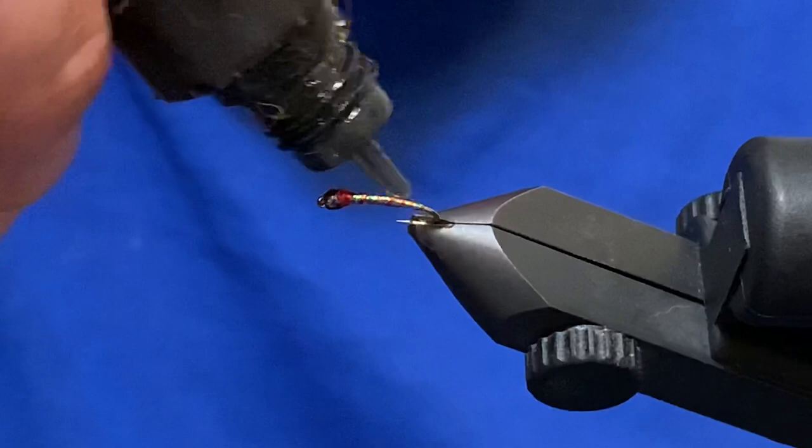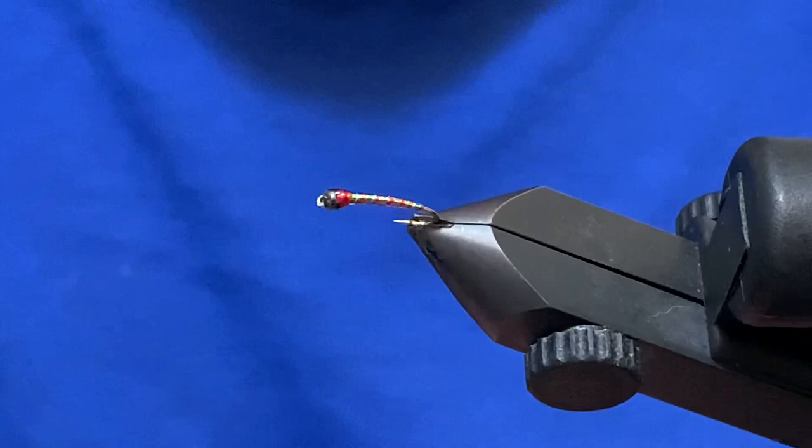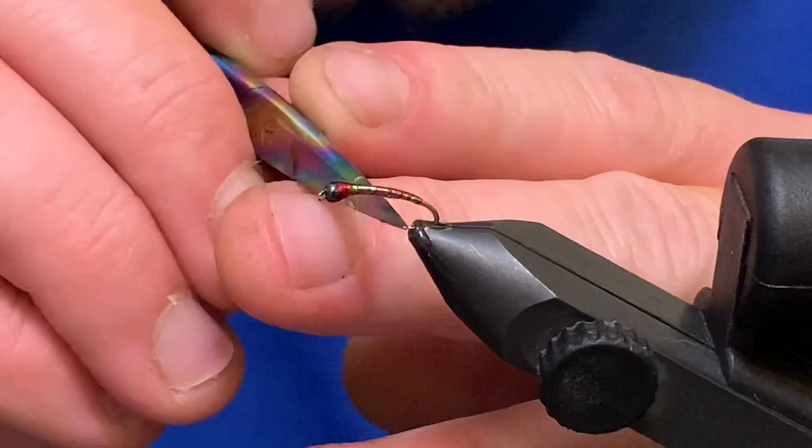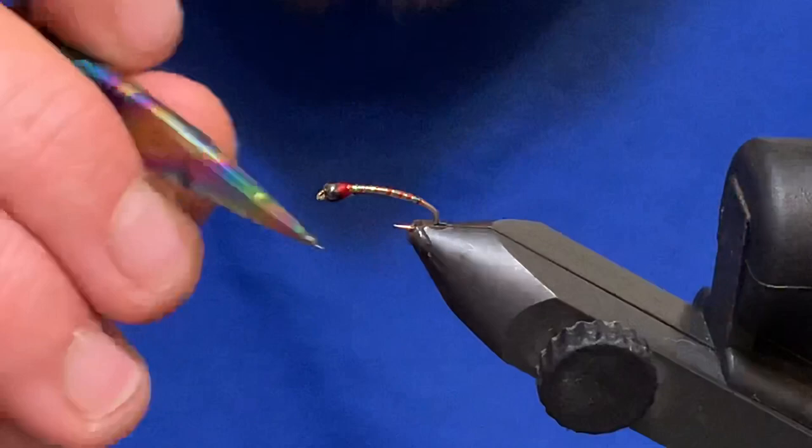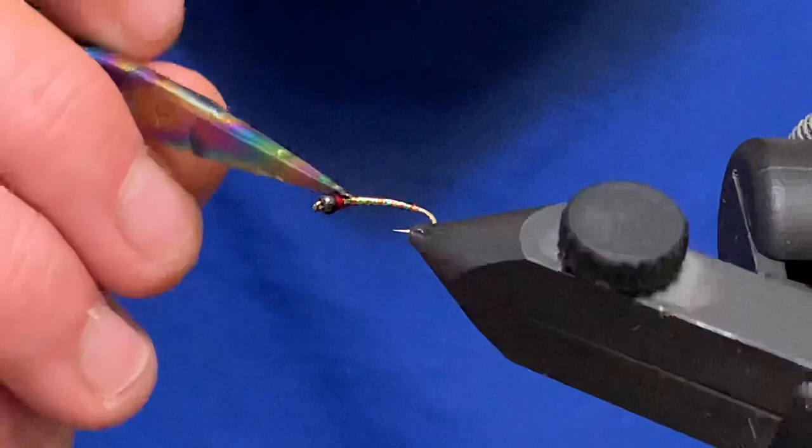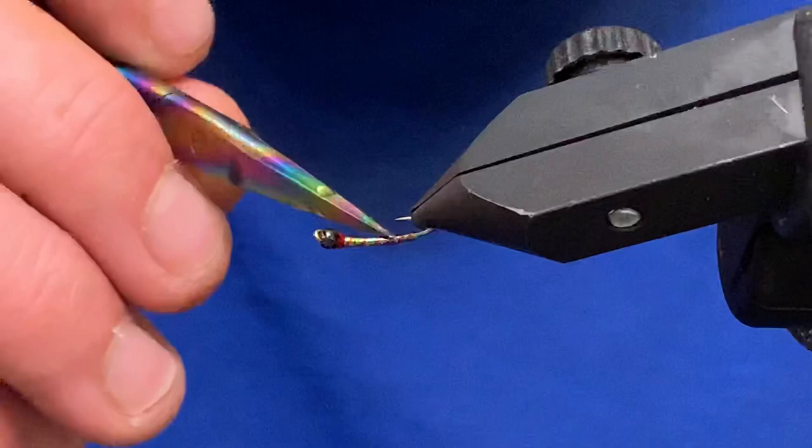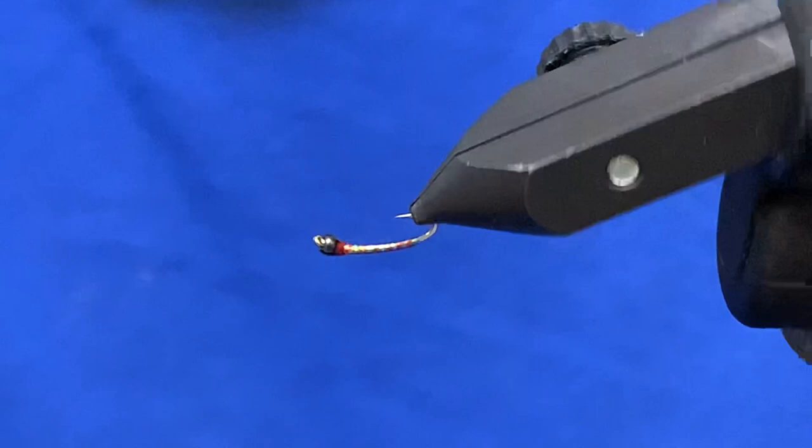These translucent type materials, in my opinion, really benefit from the resin. It just magnifies that material underneath and allows that red to pop through that much more. This is Deer Creek, but use the resin of your choice. I just give that a nice light coating and give it a zap.